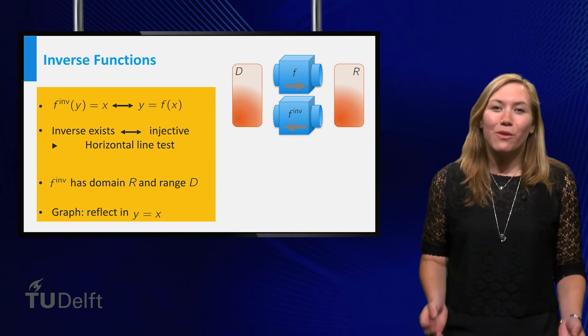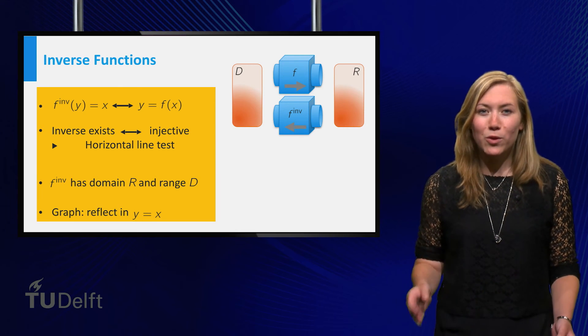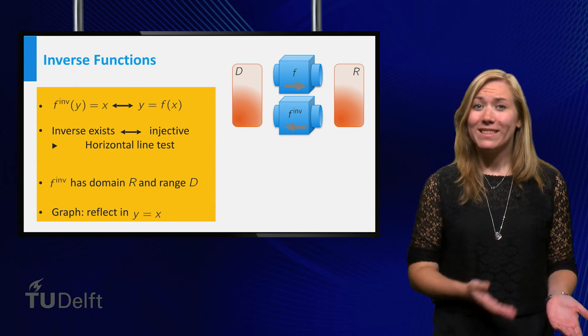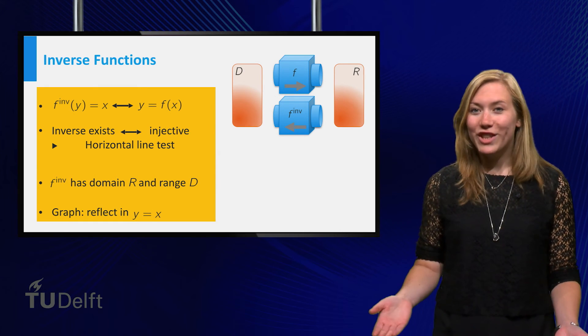An inverse of a function exists only if it never gives the same output for two different inputs. And you can check this by using the horizontal line test. If this happens, we call the function injective.